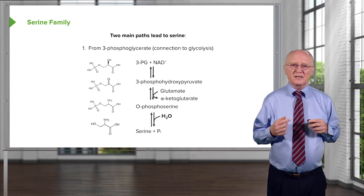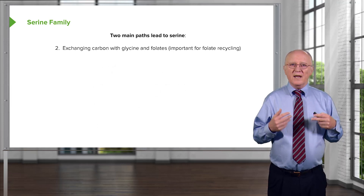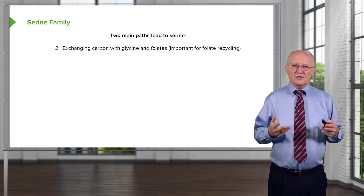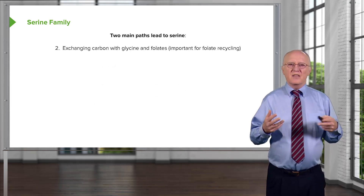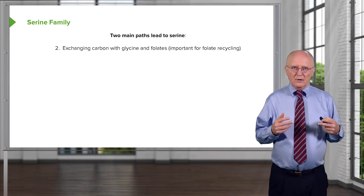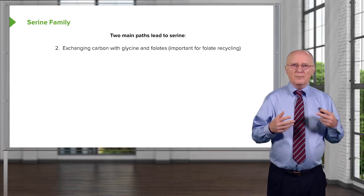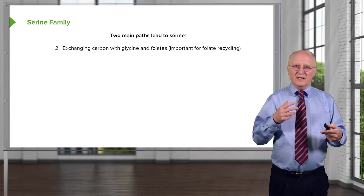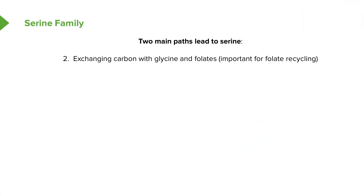It's a very simple set of steps that make that. A second way of making serine starts with glycine. This is a set of reactions described in other lectures relating to folate metabolism. This is a very important reaction, not only for making serine, but also in the reverse direction for making glycine, as well as interchanging the formation of different folates, as we will see.